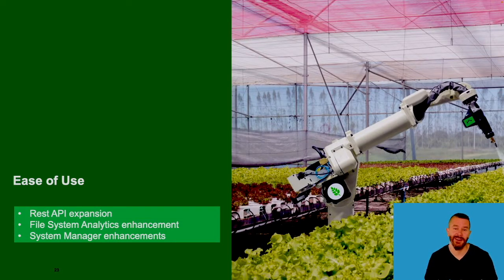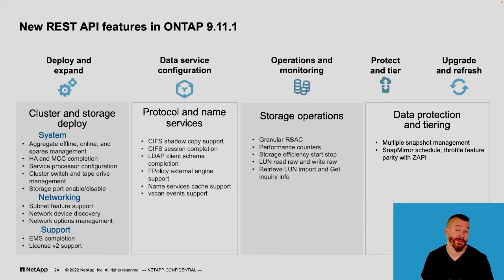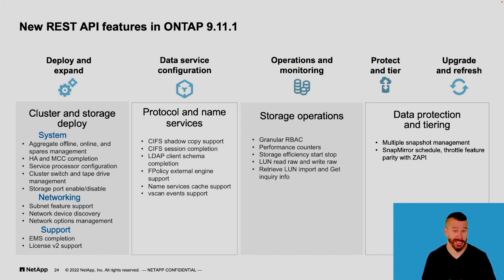Let's talk about ease of use features added in ONTAP 9.11.1. There are two elements: making ONTAP easier to use with better interfaces and workflows, and improving automation so administrators have less to do. On the automation front, our REST API set has been growing since we began migrating from ZAPI to REST. Now with ONTAP 9.11.1, our REST API set is very complete. Anyone still using ZAPI or legacy ZAPI APIs — whether home-written scripts or tools that call ZAPI — really needs to begin transitioning to REST APIs. Both API sets are still available today, but ultimately we'll be phasing out ZAPI and moving to REST only.